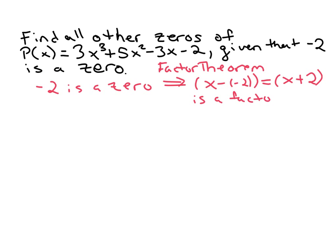Okay, and I won't write out any more complete sentences in this video, but I want to be real clear about the logic there. So since negative two is a zero, then x plus two must be a factor of that polynomial.